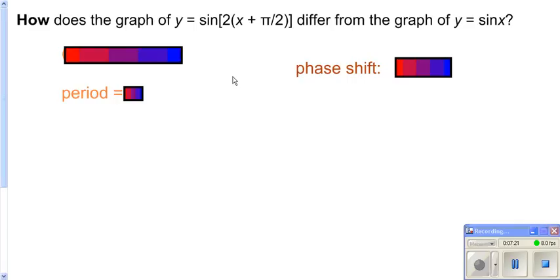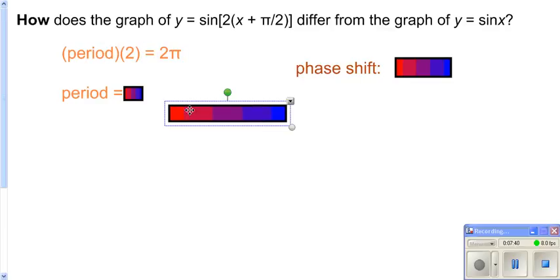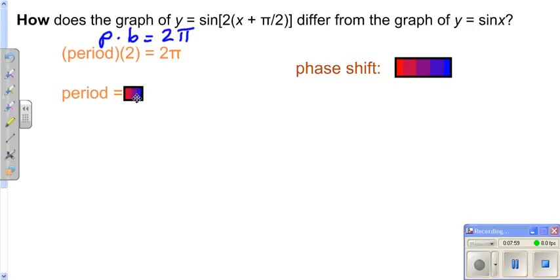Let's see how this graph differs from our normal sine graph. We have a 2 in front of x, so that's our B value and it affects the period. Using the peanut butter equation: period times B equals 2 pi. With B equal to 2, divide both sides by 2 and you get a period of pi. The phase shift is also affected — for this particular problem, we're going to go pi over 2 units to the left.